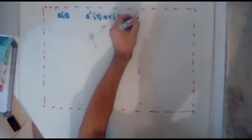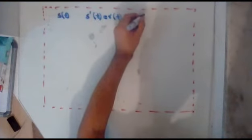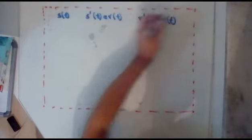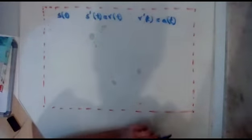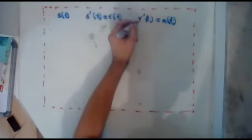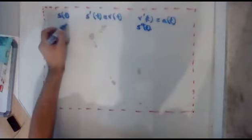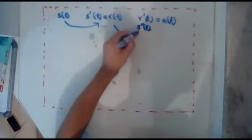If we differentiate speed, so v of t, so v dash t will give you a of t, so the rate of change of velocity is the acceleration. And obviously, that can also be written as s dash dash t, so the secondary, so differentiate, differentiate again.